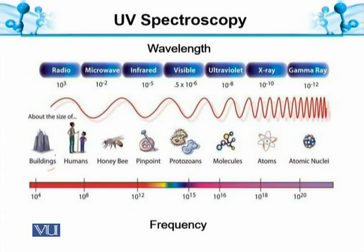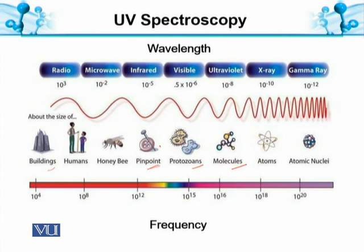We can compare radio waves to the size of buildings or humans — radio waves are generally in meters, such as 10 or 3 meters. Microwaves can be compared to the size of honey bees, whose wavelength is much smaller. Infrared radiations can be compared to a pinpoint. The visible region, ultraviolet, and molecules have also been given size representations. Radio waves only reflect from surfaces — like radio signals, mobile signals, or television signals — which bounce from surfaces back to surfaces.